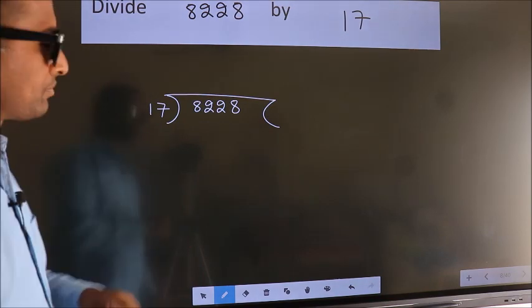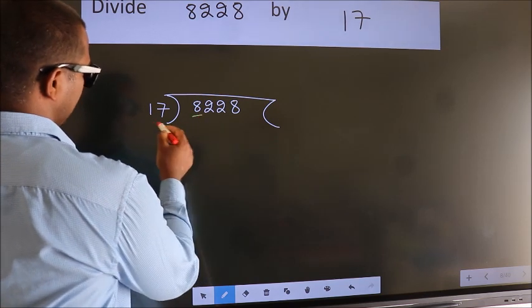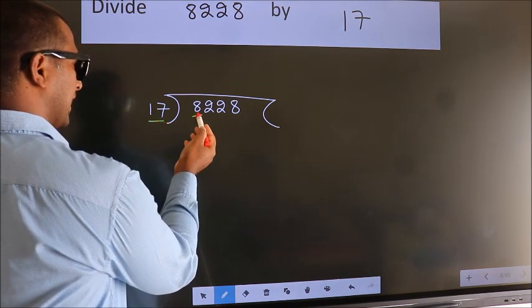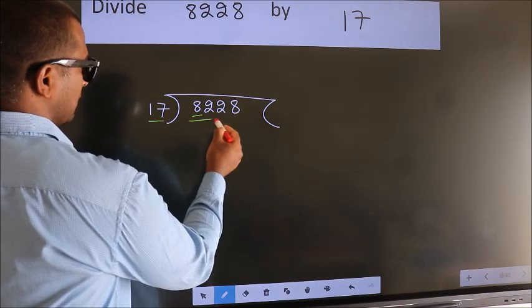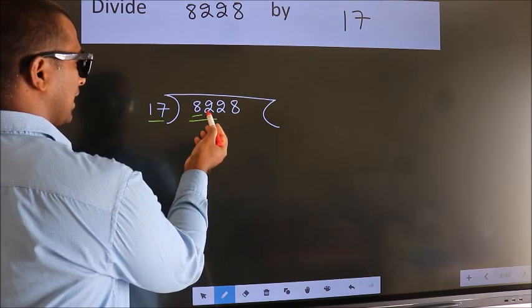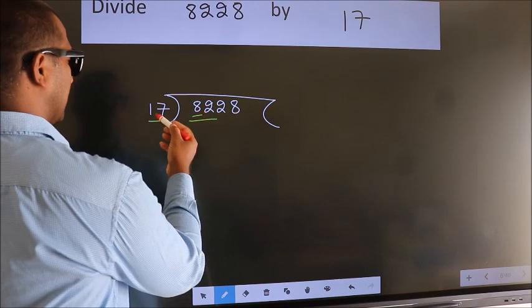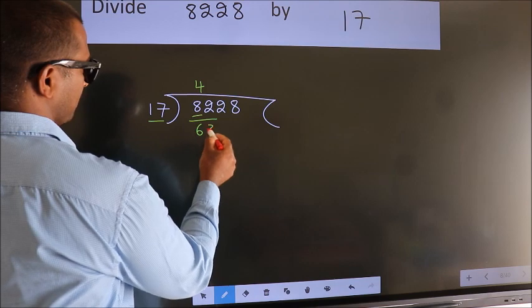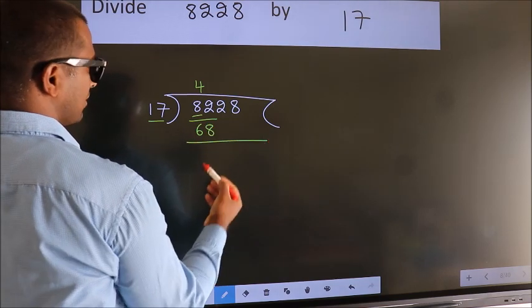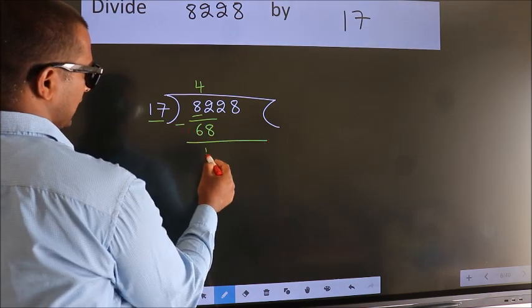Next. Here we have 8. Here 17. 8 is smaller than 17, so we should take 2 numbers: 82. A number close to 82 in the 17 table is 17 times 4 is 68. Now we should subtract. We get 14.